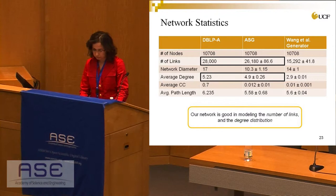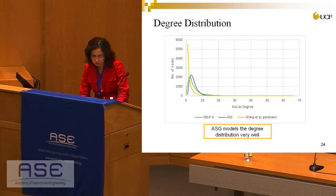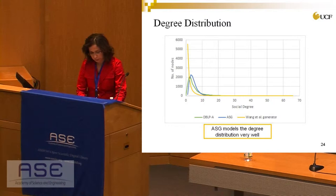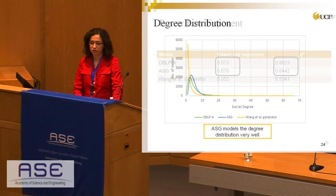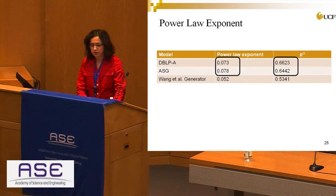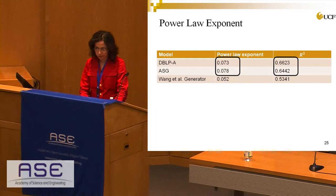The degree distribution plot shows our work (blue line) is close to the real graph (green line) and slightly harder to distinguish. The Wang et al. generator (orange line) differs more, so we truncated the plot at degree 60 for clarity. Our generator closely models the real degree distribution. In terms of power law exponent, we provide both the exponent and the R-squared value representing goodness of fit, and our generator's values are almost the same as the real dataset.